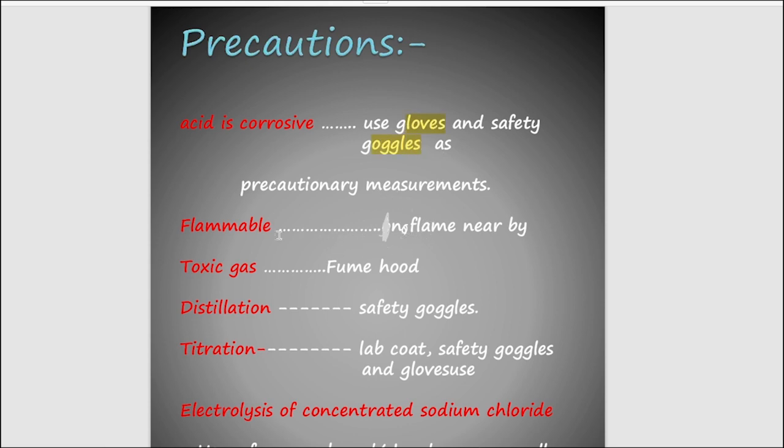If flammable substance is there, always remember no flame should be nearby. Fume hood is used for the toxic gas. For distillation process, safety goggles. For titration, you should wear lab coat, safety goggles, and gloves. These gloves will be used for the titration process.